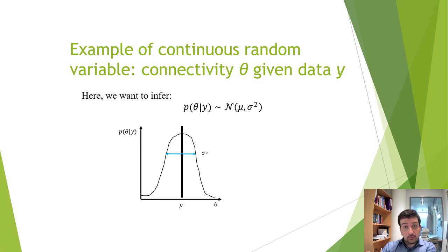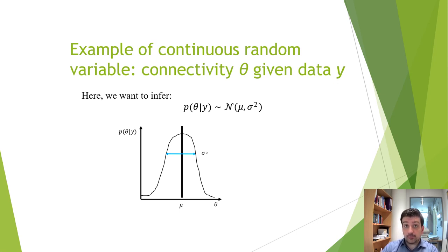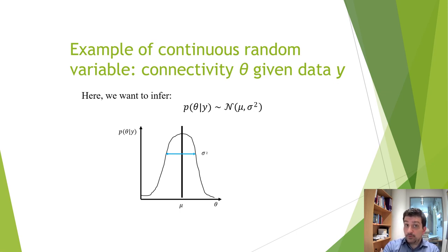Often when we have brain data — denoted by y on this slide — we want to solve the inverse problem to get theta, which is the brain connectivity. What you see here is not the random variable but the Bayesian probability defined over the random variable theta given y, and this distribution is normal — a Gaussian — with mean mu and variance sigma squared. The reason this is Bayesian is that Bayesian probabilities always have a premise and a conclusion: the conclusion is a particular value for brain connectivity theta, and the premise is that this value was inferred using brain data y.